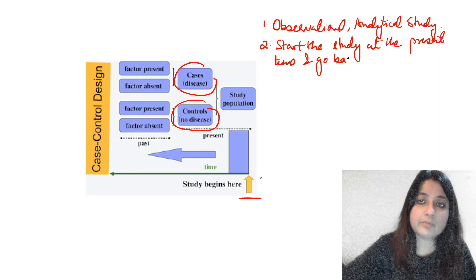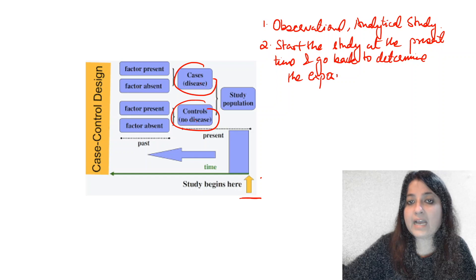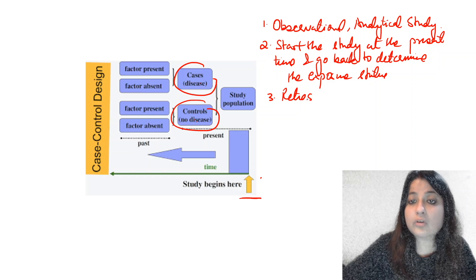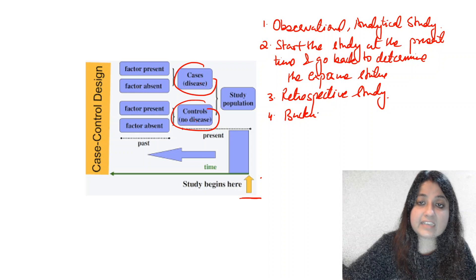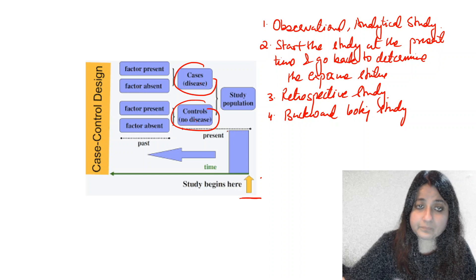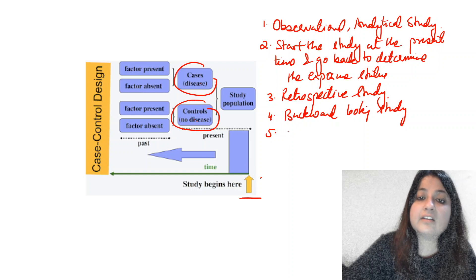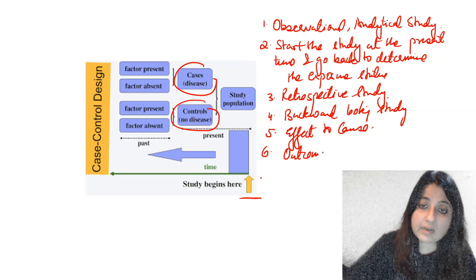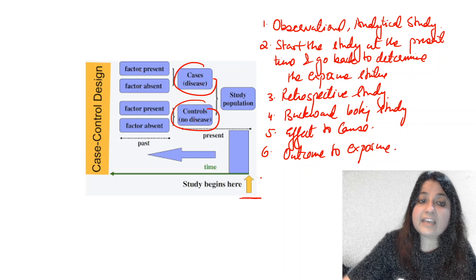And you go back to determine the exposure status. So the important point is what are the other terms you can call this by. It is also known as a retrospective study, a backward looking study. How are you proceeding? You are proceeding from effect to cause. Cancer has already occurred. You are proceeding from outcome to exposure. You go back to determine exposure status.